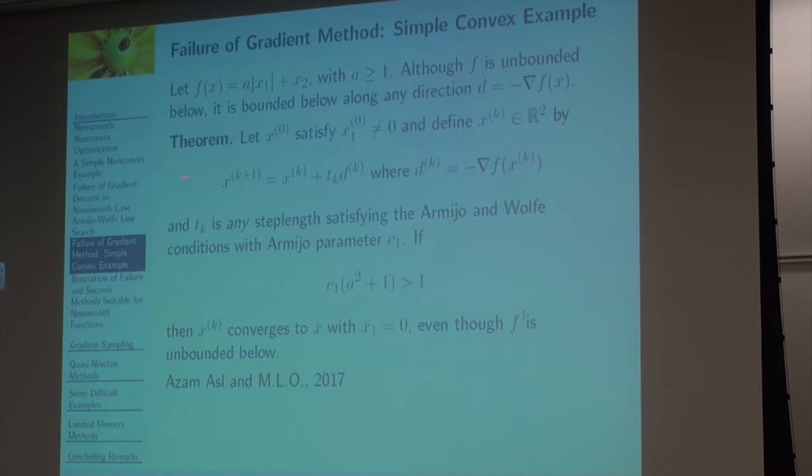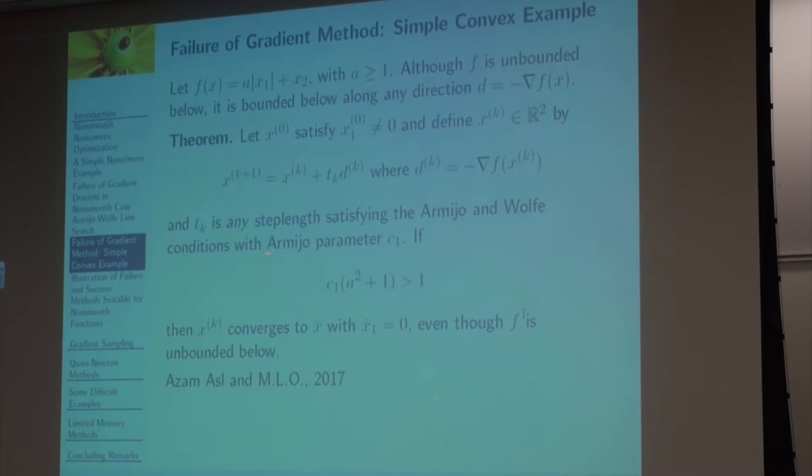So what happens on this, for this line search, I'm interested in looking at a very simple function here. You can't imagine a simpler non-smooth function. It's unbounded below because we can drive x2 to minus infinity. But x2 can go to minus infinity, and x1 could be 0. I'm going to make a greater or equal to 1 because that way f will be bounded below along any direction v.